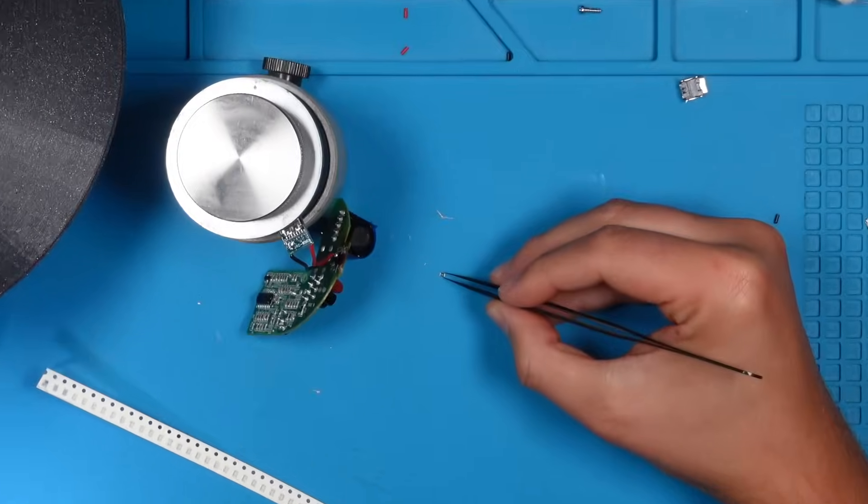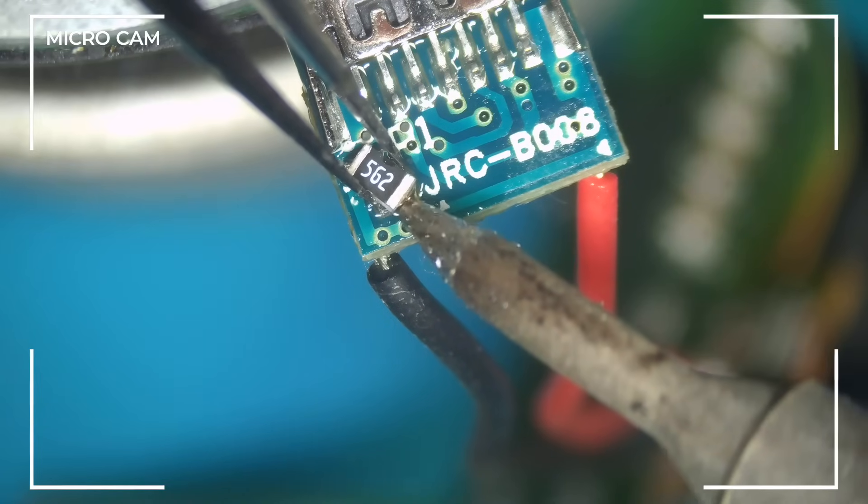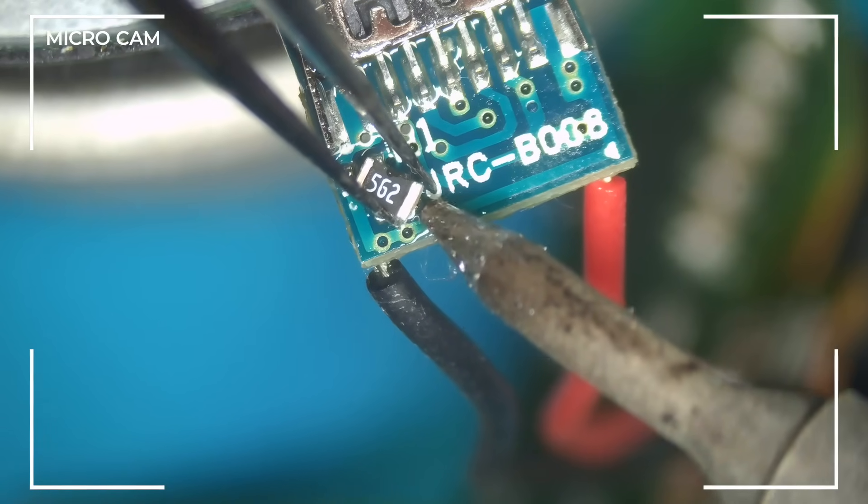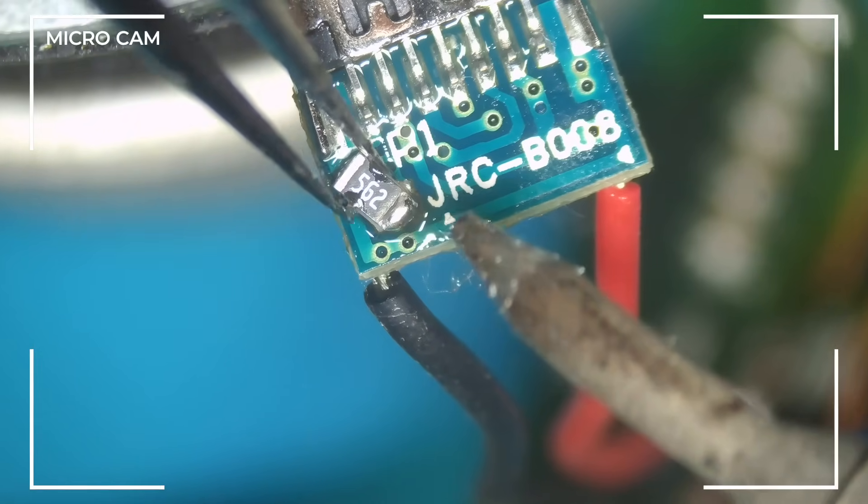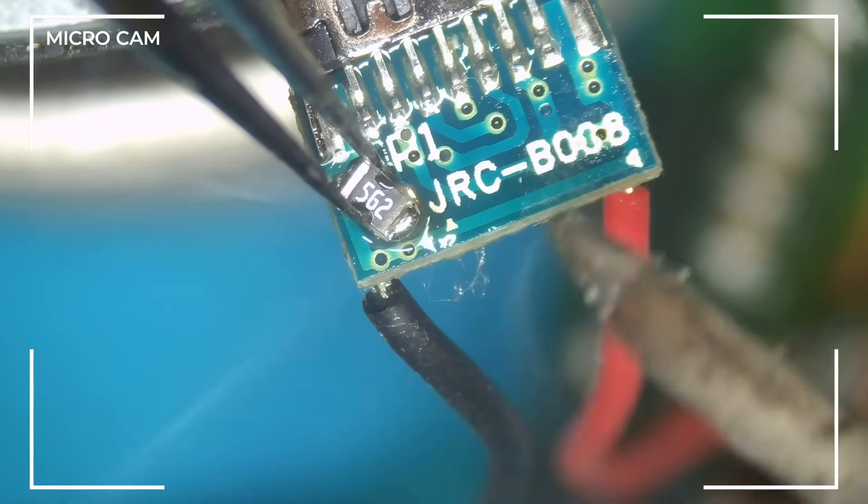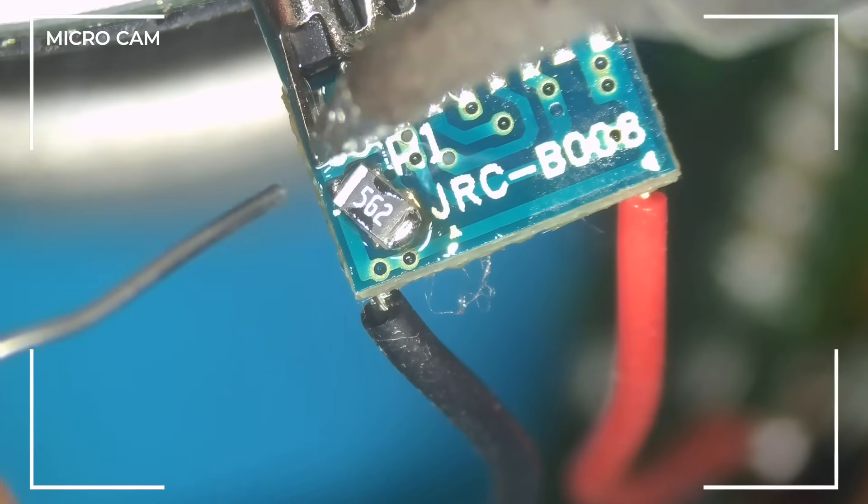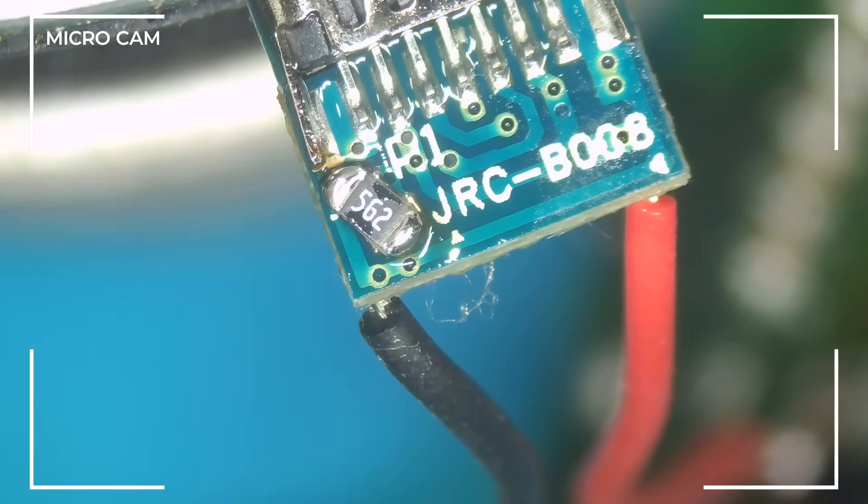Time to pick up our tiny resistor with tweezers. Now for the trickier bit, soldering it in place. This SMD size isn't ideal, but it's all I have on hand right now. One pad soldered. Now for the upper one. It's not the neatest job, but it should do the trick.